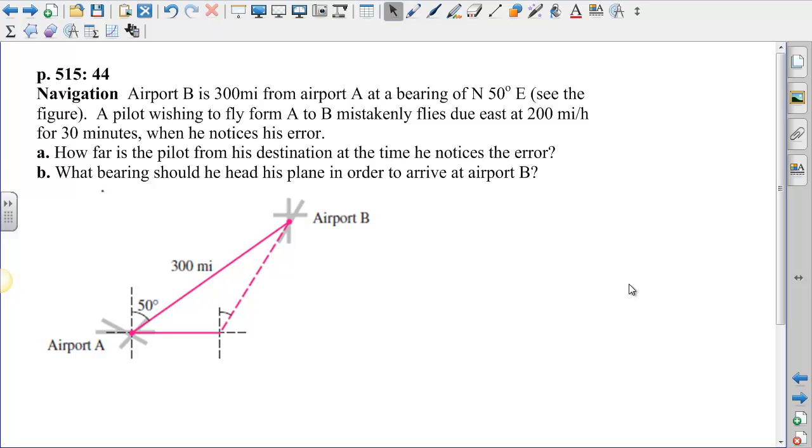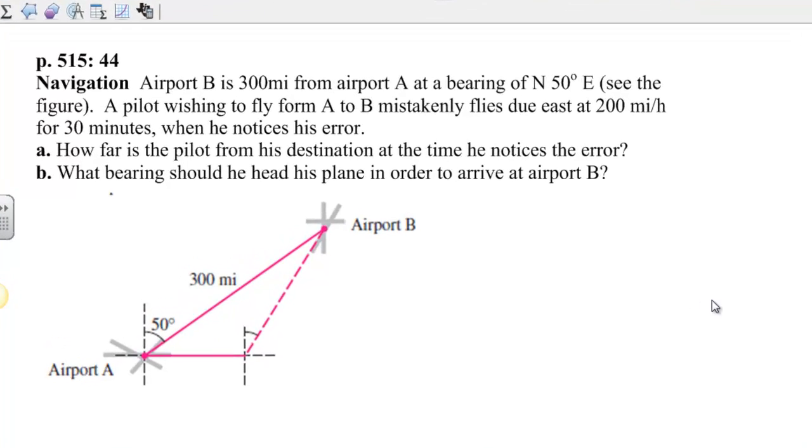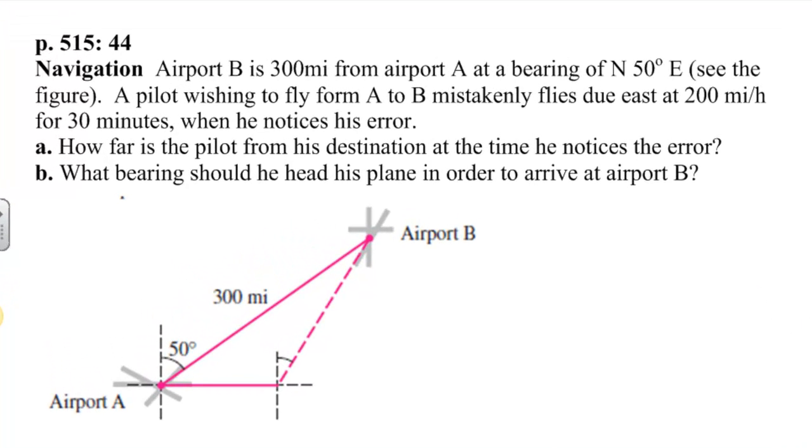Here's an example from the Law of Cosines section, it's problem number 44, and it reads: Airport B is 300 miles from airport A at a bearing of north 50 degrees east, and you can see the figure below.